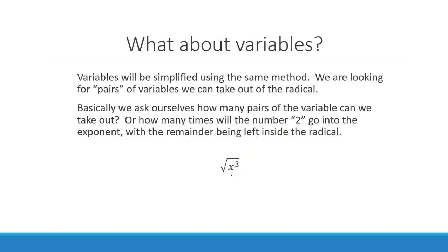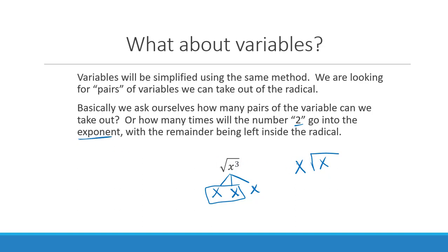What do you do with variables? You could still use a factor tree, but think about what a square root means — it's looking for a pair. When you have x to the 3rd, how many pairs do you have? You have one pair, so x gets to come out of the radical, and the remaining one stays inside. Another way to think about this: how many times will 2 go into the exponent? That's how many you take out, and whatever remainder is left stays inside the radical. So 2 goes into 3 one time with a remainder of 1.